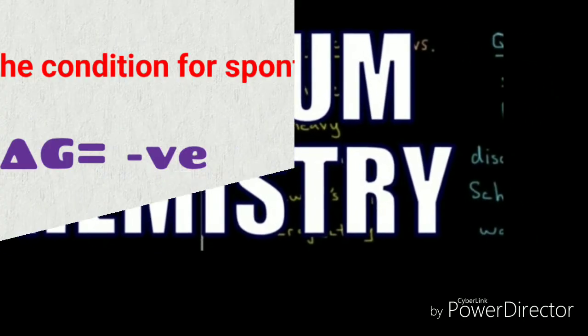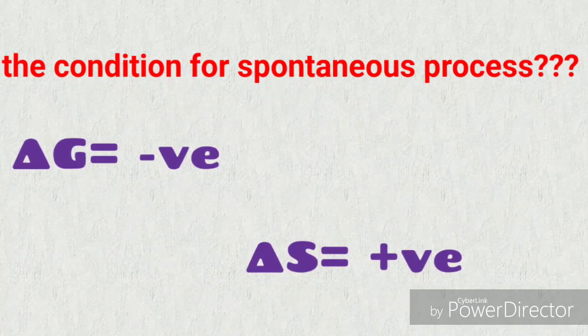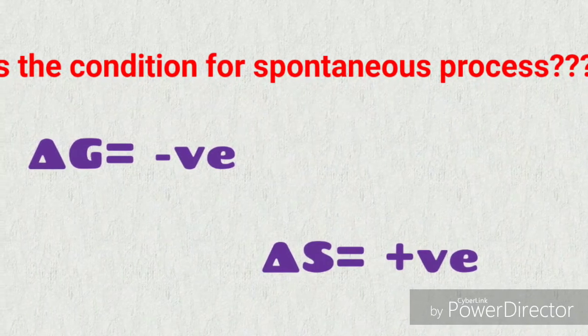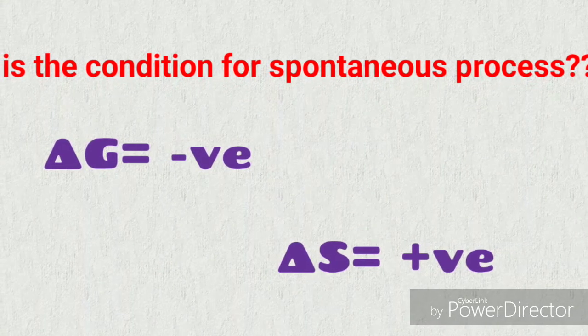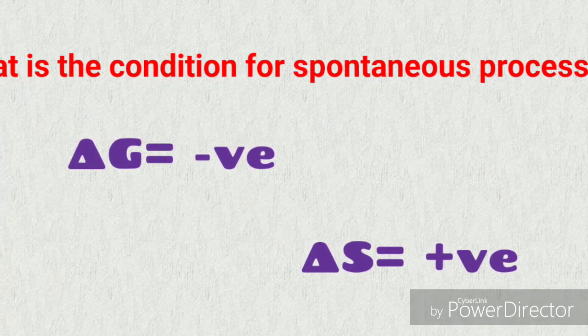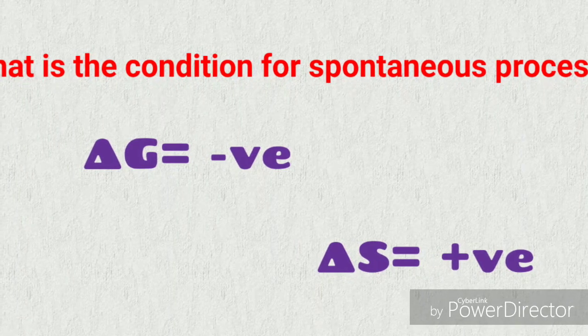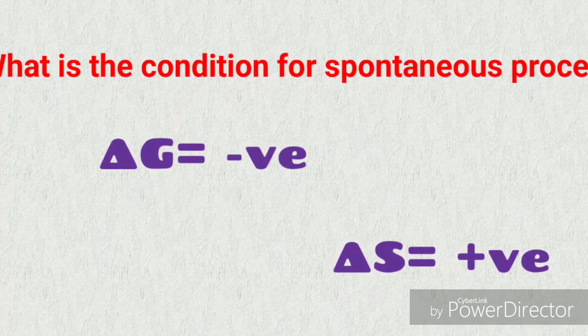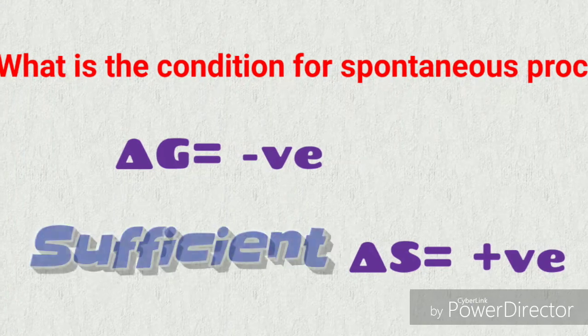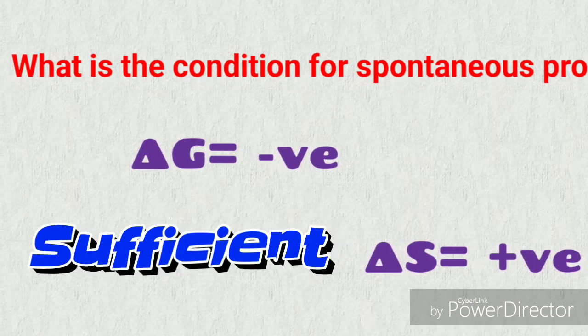So the first question was: which is the condition for a spontaneous process? I answered that delta G will be negative and delta S will be positive. Then they asked are these conditions sufficient, or are there any other conditions? I said I don't remember, I really don't remember — it may be that there are more conditions but I couldn't recall.